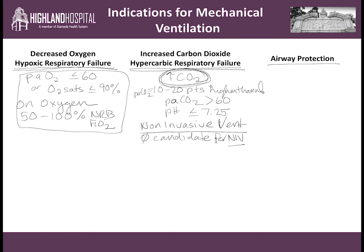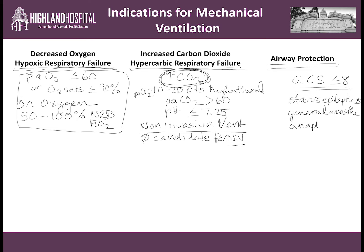The third category is airway protection. This is somebody who needs an endotracheal tube to stent open their airway and protect them. This is anyone with a GCS less than or equal to 8. We consider it in people with status epilepticus, continuous seizure, in people requiring general anesthesia, and in people who have anaphylaxis or thermal injury, for example.